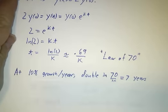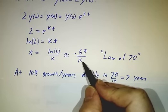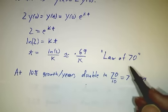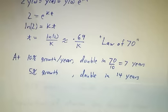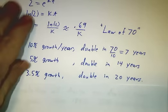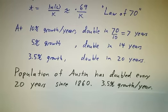If you have 10% growth per year, that really means that k is 0.10. 0.69 divided by 0.10 is 69 divided by 10. 70 is close enough for most purposes, so if you've got 10% growth per year, it takes 70 over 10, which is 7 years to double. If you've got 5% growth per year, you double every 14 years. If you've got 3.5% growth per year, you double every 20 years. And in fact, if you plot the population of Austin since 1860, it's beautiful exponential growth. It's been roughly 3.5% growth every year for the last 150 years, and that means that the population is doubled every 20 years.